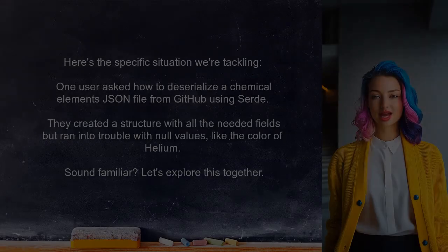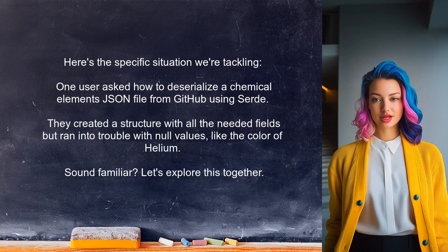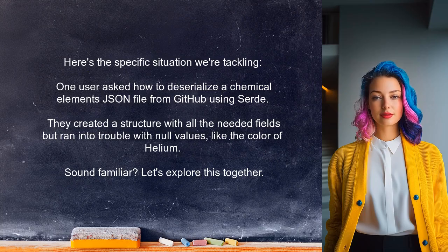Here's the specific situation we're tackling. One user asked how to deserialize a chemical elements JSON file from GitHub using Serde. They created a structure with all the needed fields but ran into trouble with fields that contain null values, like the color of helium. Sound familiar? Let's explore this together.